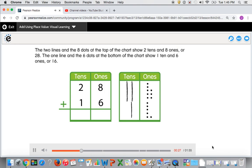The two lines and the eight dots at the top of the chart show two 10s and eight 1s, or 28. The one line and the six dots at the bottom of the chart show one 10 and six 1s, or 16.